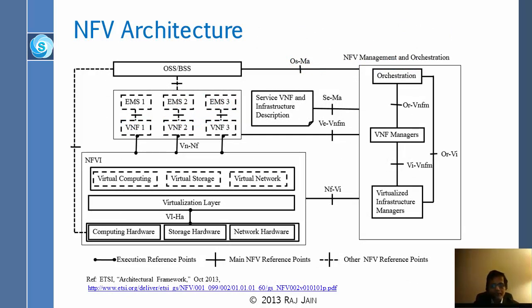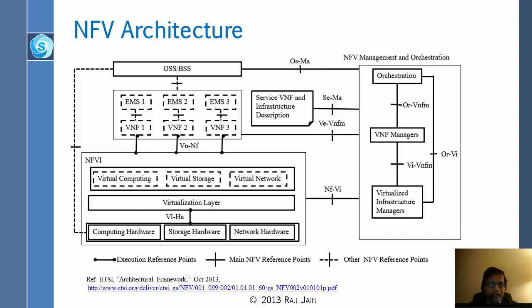Here is the NFV architecture diagram. At the bottom left you have hardware: computing hardware, storage hardware, and network hardware. On top of that you put a virtualization layer — essentially a hypervisor — giving you virtual computing, virtual storage, and virtual network. That is the NFVI. On top of that you have virtual machines running VNF1, VNF2, VNF3, each of which can also have its own management system, all shown with dotted lines indicating they are virtual.